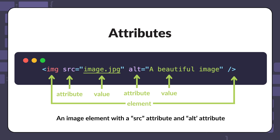Other common attributes are the src (source) and the alt (alternative) attributes, which are used to specify the source of an image and provide alternative descriptive text for the image respectively. Similar to the href attribute, the src attribute is required because it specifies the image file to be displayed. The alt attribute is not required but is recommended for accessibility purposes.